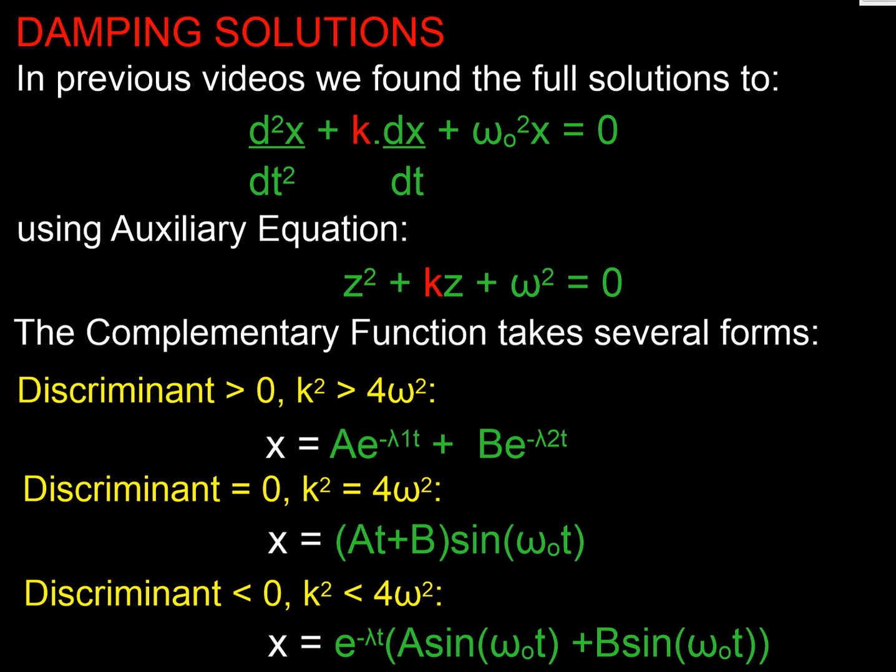So we know how to solve this. We've looked at solving these in previous videos. So let's just check the setup we're looking at. First thing, I've got a plus omega squared term there. So in principle, I've got an oscillation going on. And what I'm going to do is think about varying my coefficient, damping coefficient K...